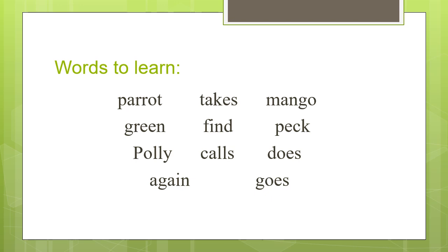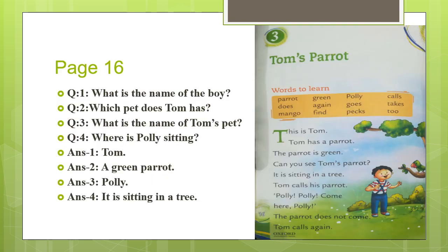Repeat them with your mother once again. Now look at page number sixteen of your book. First I will read the page for you, then I will have some questions for you at the end. Page number sixteen — Tom's Parrot. Words to learn: Parrot, Green, Polly, Calls, Does, Again, Goes, Takes, Mango, Find, Pecks, To. You all know these words — we have learned them. These are the same words.